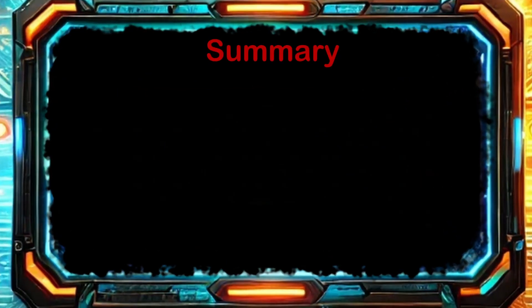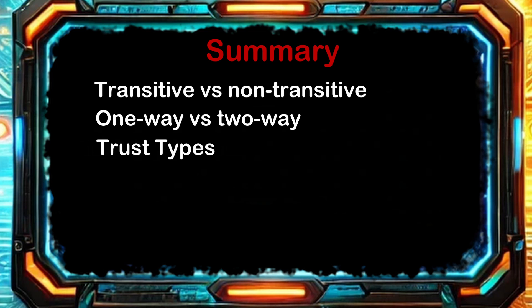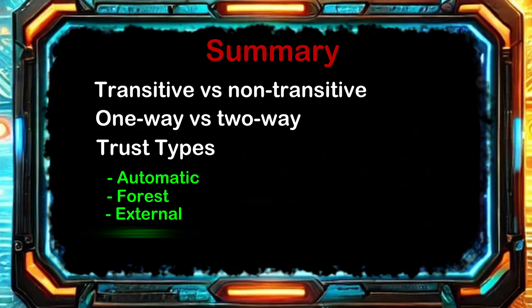That's it for this lesson. We reviewed some important information about Active Directory trusts. First, we compared transitive and non-transitive trust relationships. Then, we reviewed how trusts can be either one-way or two-way directional relationships. We finished this lesson by going through each of the types of trusts, including automatic trusts, forest trusts, external and realm trusts, and shortcut trusts, which are the only trusts between domains in the same forest.